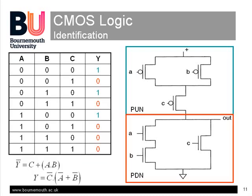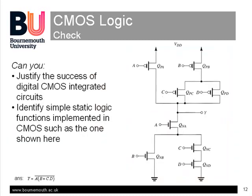This is the truth table to check out the previous example — the zeros from the pull-down network, the ones from the pull-up network. Again notice the complementary arrangements of the pull-up and pull-down transistors. Finally, this is the check slide. Hopefully you should now be able to make some sort of case for the success of CMOS in modern electronics-based products, and you should also be able to identify static logic functions such as the one shown here for you to try.